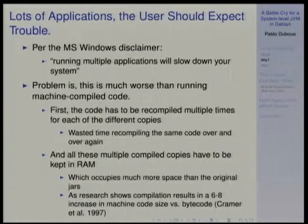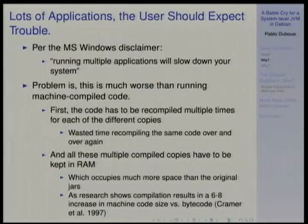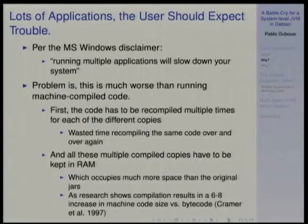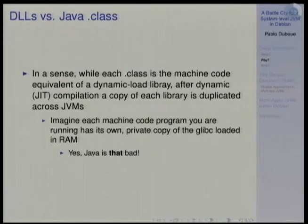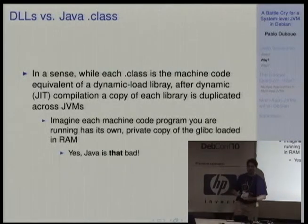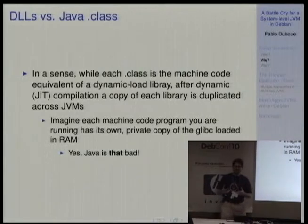The problem is that with just-in-time compilation, your code is being compiled multiple times for each of these things. It is wasted time recompiling the code over and over, but that's just startup — in a sense you can live with it. The bigger problem is that all these multiple copies of the bytecodes are living in RAM in separate places. Bytecode is very small, but the machine code that results from JIT compilation is six to eight times bigger. In a sense, this is the same thing as having a different copy of glibc loaded in RAM for every process you have.